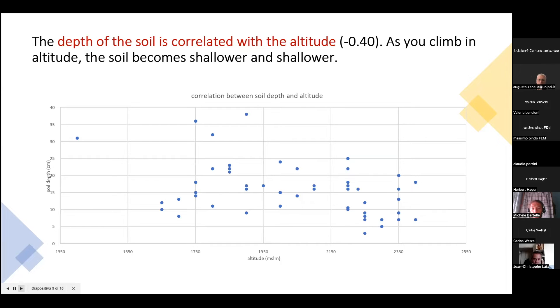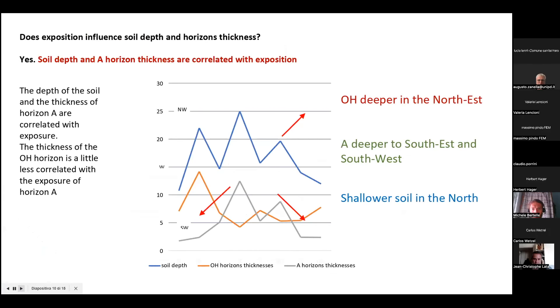That limit the colonization by plants and animals. Moreover, we analyzed the soil depth and the thickness of main horizons related with the exposition. As you can see, in north exposition soils, soil depth and horizon thickness are shallower in the north. This probably is because of climate limits again, once more.